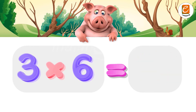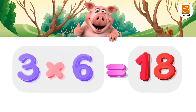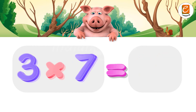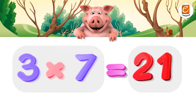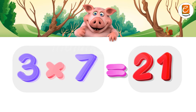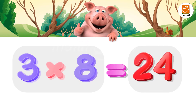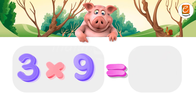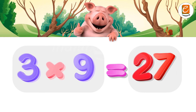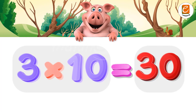Three sixes are eighteen. Three sevens are twenty-one. Three eights are twenty-four. Three nines are twenty-seven. Three tens are thirty.